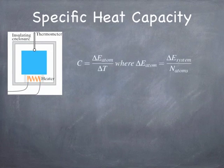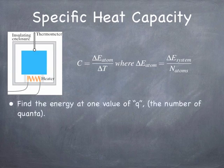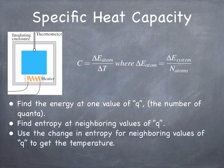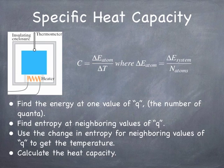Let's talk about specific heat capacity. If we heat a block of material, its temperature rises. The atomic specific heat capacity is the change in energy per atom per degree Kelvin. The way this works: find the energy at one value of q, then compute the change in entropy per q, get the temperature from that, and then calculate heat capacity using its definition.